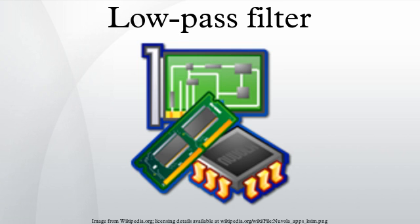Ideal and real filters. An ideal low-pass filter completely eliminates all frequencies above the cut-off frequency while passing those below unchanged. Its frequency response is a rectangular function and is a brick wall filter. The transition region present in practical filters does not exist in an ideal filter. An ideal low-pass filter can be realized mathematically by multiplying a signal by the rectangular function in the frequency domain, or equivalently, convolution with its impulse response, a sinc function, in the time domain.